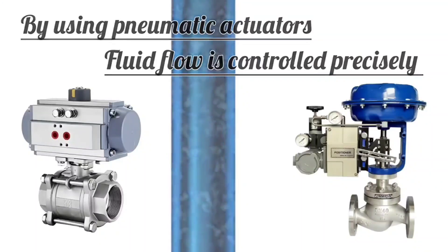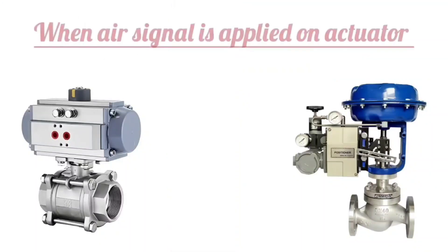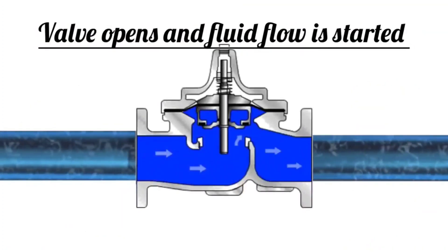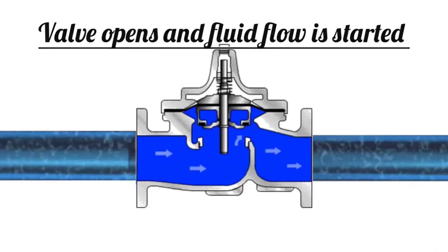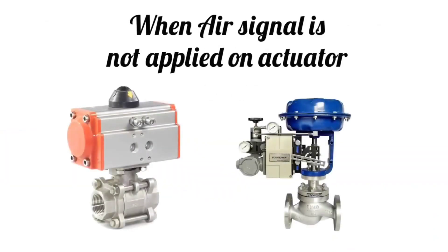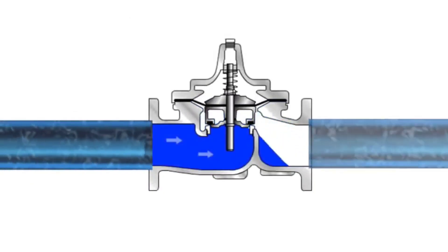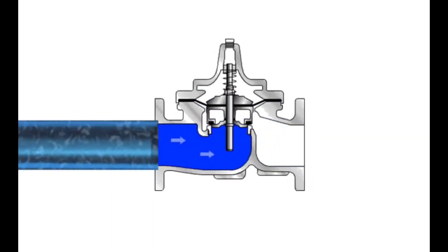When an air signal is given to the actuator, the valve is open and fluid flow begins. When the air signal is not given to the actuator, the valve closes and fluid flow stops.